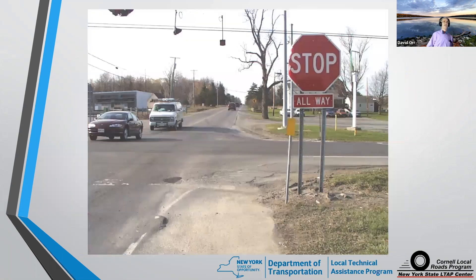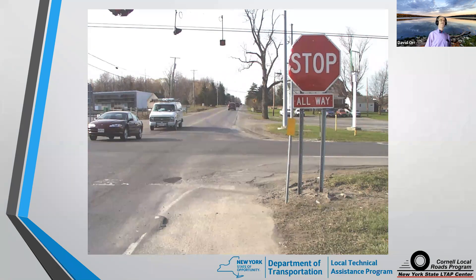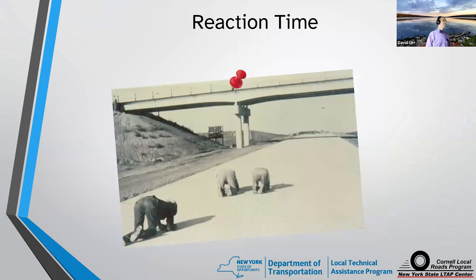More commonly we're talking about stop and yield controlled intersections, but intersections of all types — how do we make them safer so they do the job of moving people while not creating hazards? Before we get into intersections, one thing I want to talk about that is pretty important is reaction time, leading into stopping distance.